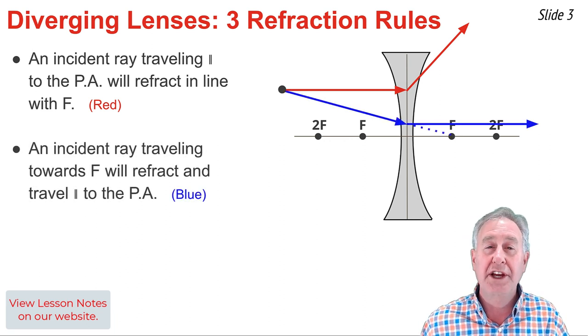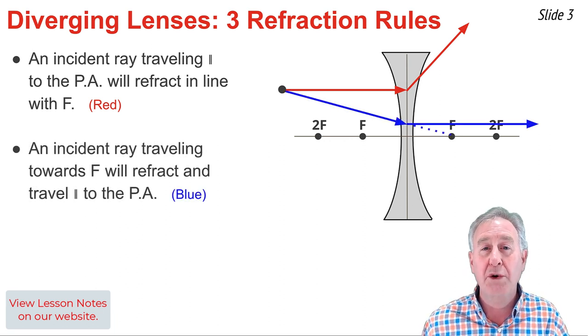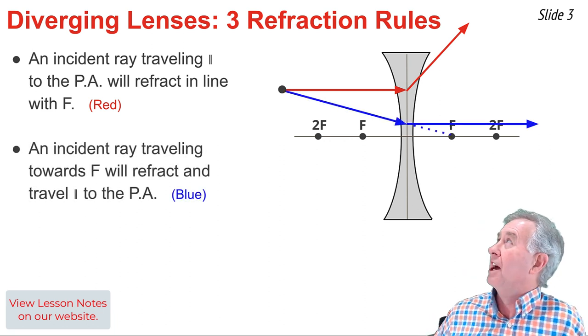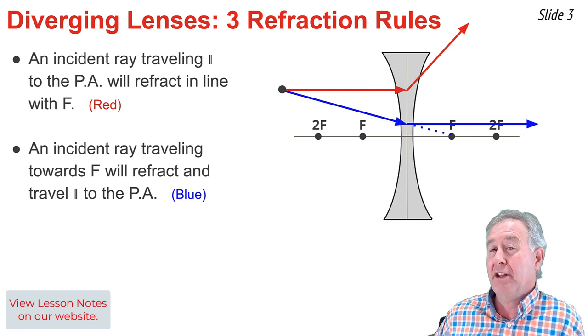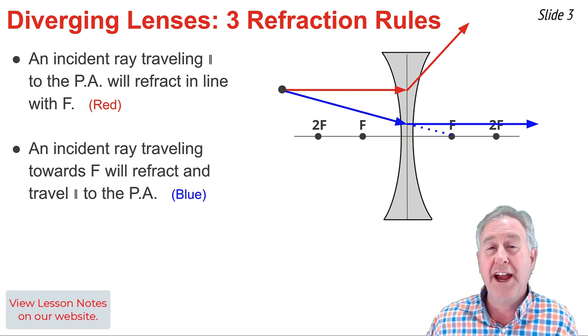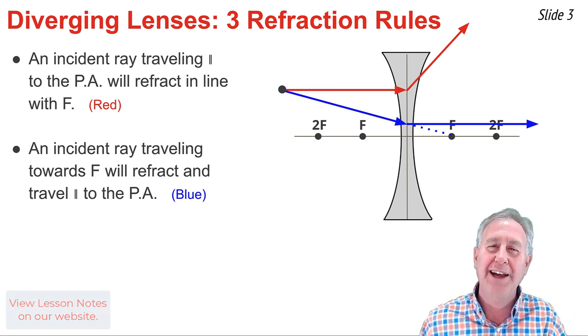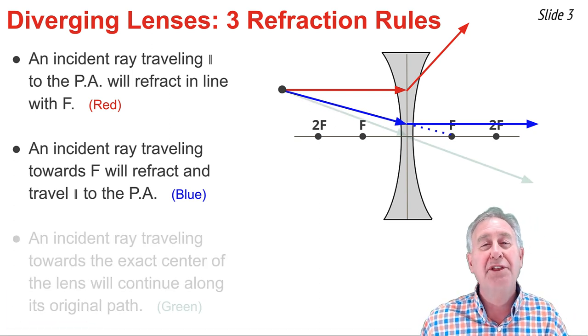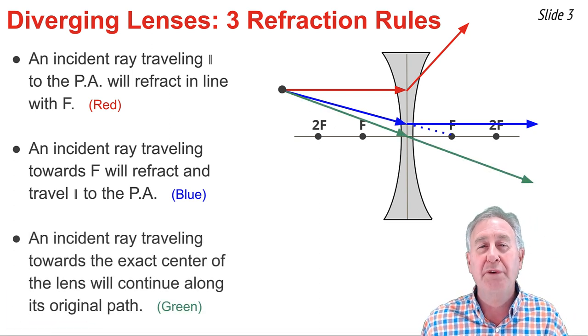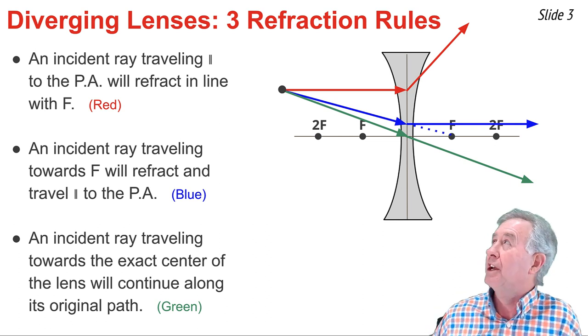The second rule is that a ray of light heading towards the focal point on the opposite side of the lens will refract and travel parallel to the principal axis.